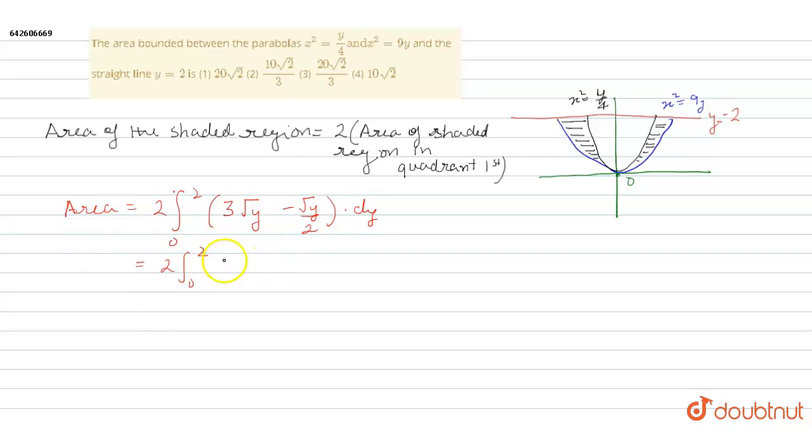2 integration 0 to 2, after taking the LCM it will come as 5 root y by 2 dy, which will further come as this 2 and 2 will get cancelled. We will take the 5 outside integration from...